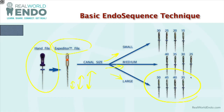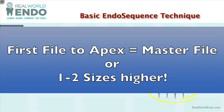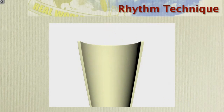Once you get down to the apex, whichever file reaches the apex first becomes your first file to the apex. You can use that as your master file, or go one or two sizes higher if you feel there's still space. The motion for using the EndoSequence follows a rhythm technique of one, two, three strokes, then you take the file out and wipe it. It's very important to keep the chip space clean. This is a very efficient file, and the technique will work well if you keep the chip space clean.